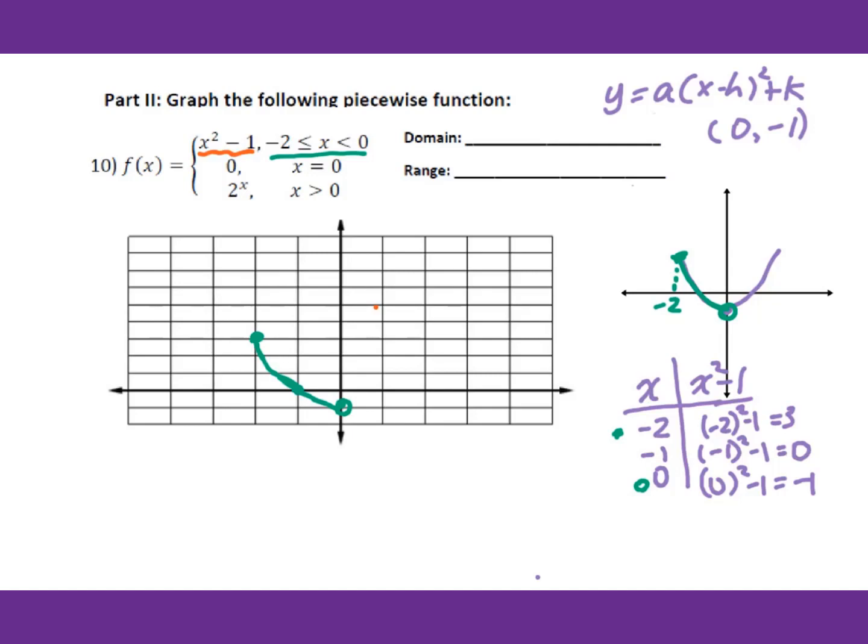Then plot the second piece — that's a single point at (0, 0).